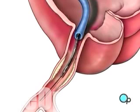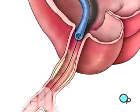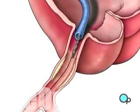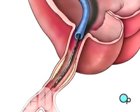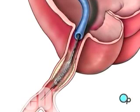The balloon catheter is then withdrawn, and another balloon catheter is inserted. This balloon has the mesh stent tube wrapped around it. Once this tube has been placed in the center of the now-widened area of the artery, the balloon is briefly inflated. The stent expands until it hugs the walls of the artery.